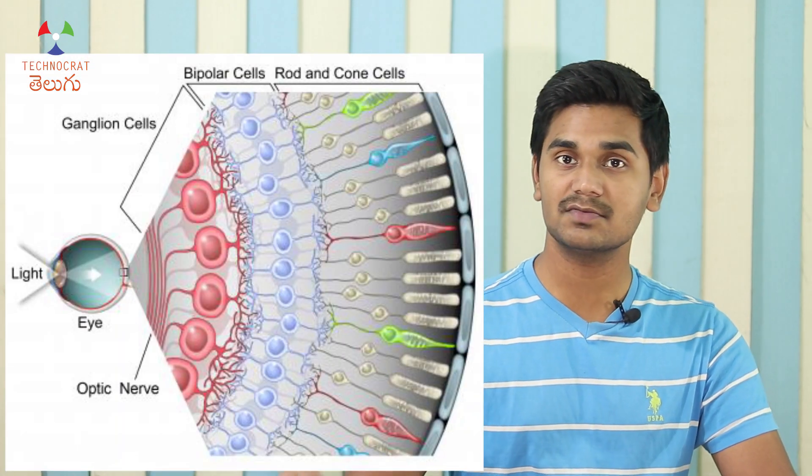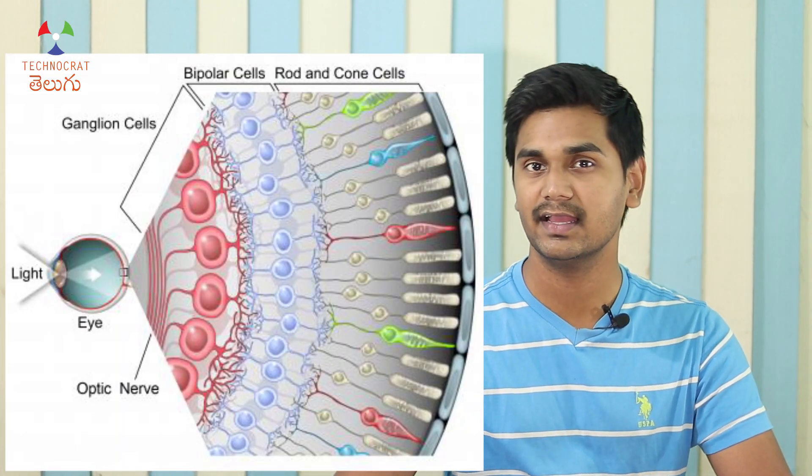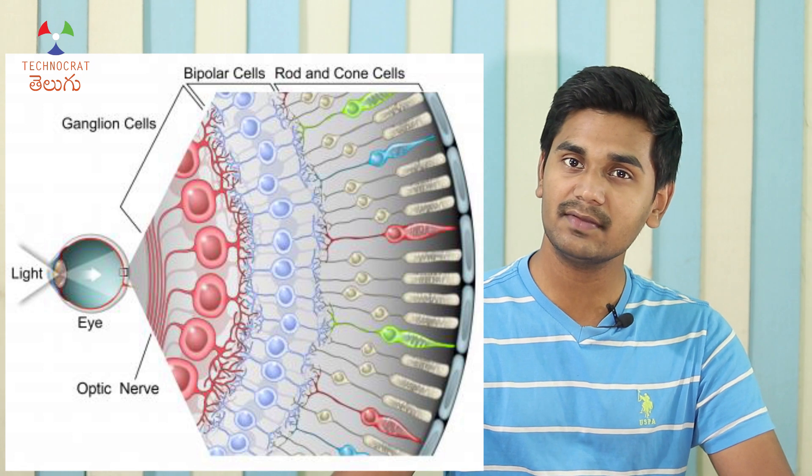We have a retina with cones, rods, and small cells. If we absorb light, we can absorb the signals in our brain. Cones are also important to absorb light in our color. The rods can absorb the color and darkness. At the point of the night, we can recognize objects in our eyes.